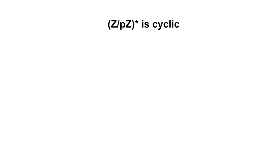Hi guys. In this video, I will prove that for any prime number p, the group Z over pZ star is cyclic. Another way of saying this is that there is some number a such that every non-zero element in Z over pZ is a power of a.